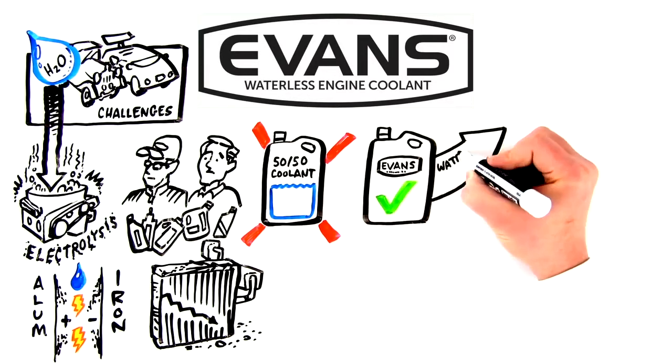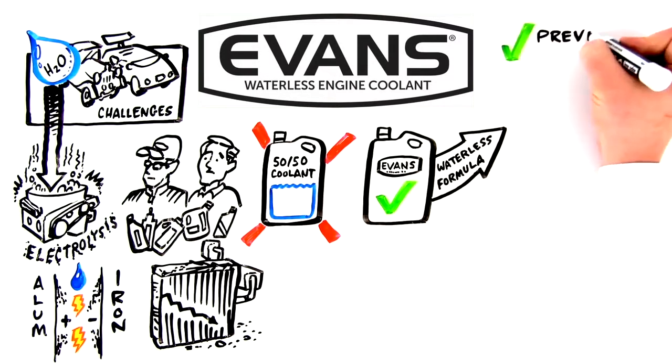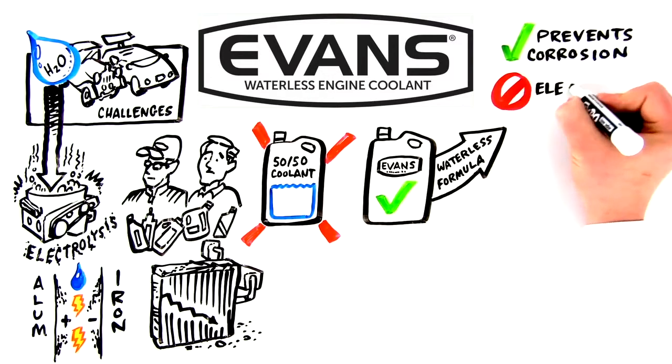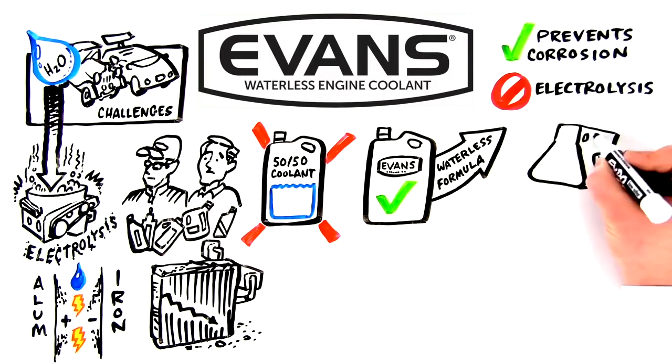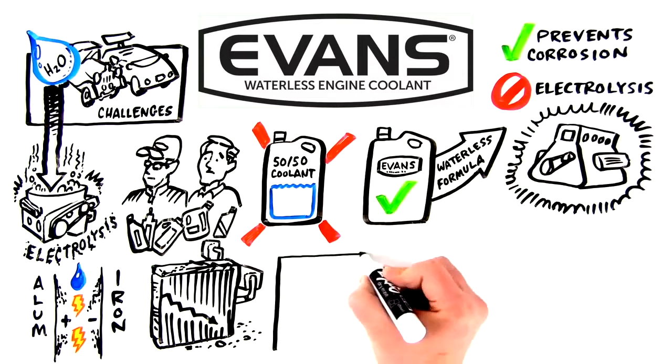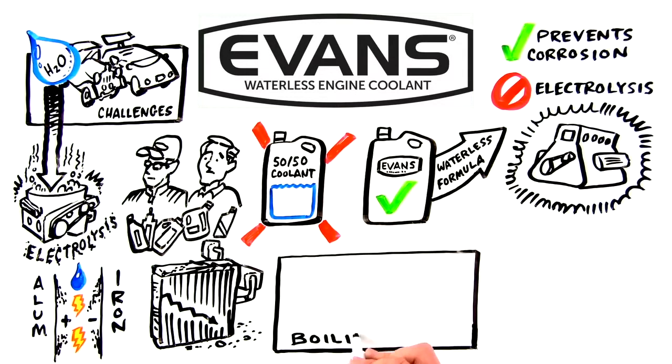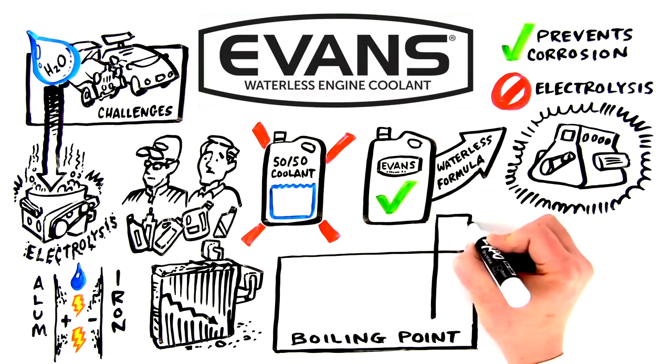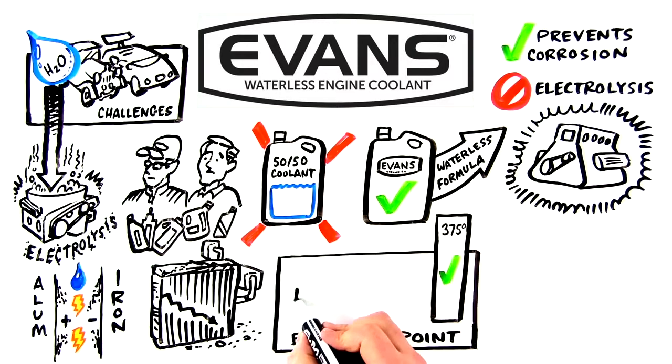Evans features a revolutionary water-free formula that prevents corrosion and doesn't support electrolysis, meaning it won't eat away at engine metals. The biggest difference though is Evans' boiling point: 375 degrees, which is far higher than water's at 212 degrees and regular coolant's at 235.